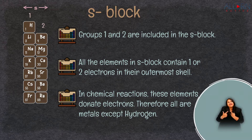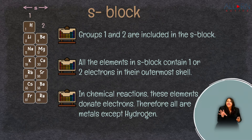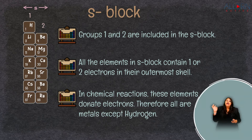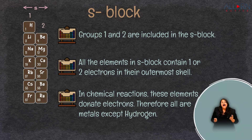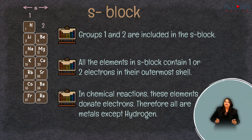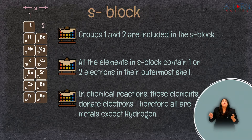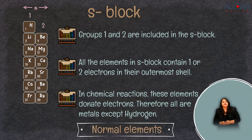Hydrogen will share electrons — it is never going to donate them. It will always share electrons unless it is forming an ionic bond, and even then it has only partial charges. The S block elements — excluding hydrogen, which is not a metal — are called alkali metals, and they all fall under the S block.